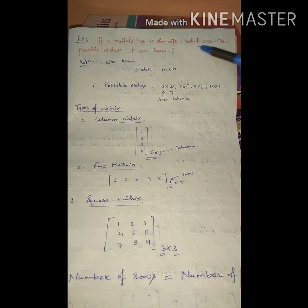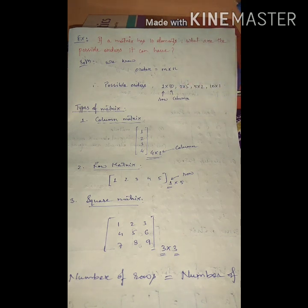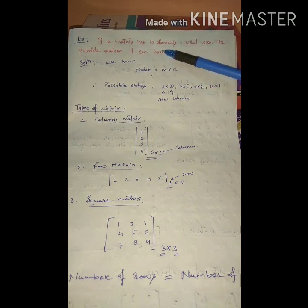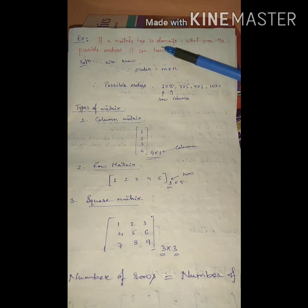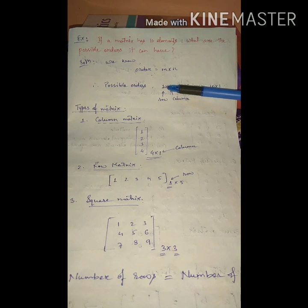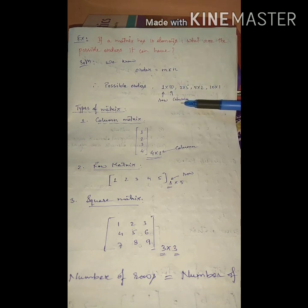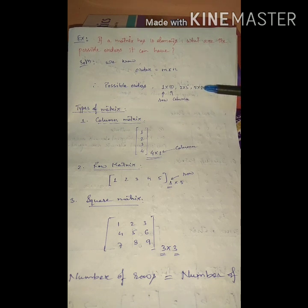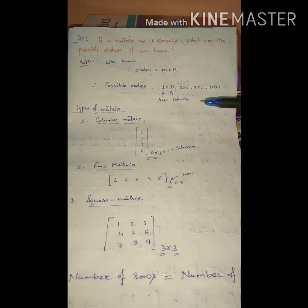If a matrix has 10 elements, what are the possible orders it can have? The order is M by N, and M times N must equal 10. We find all factor pairs of 10: 1×10, 2×5, 5×2, and 10×1. So the possible orders are 1 row 10 columns, 2 rows 5 columns, 5 rows 2 columns, and 10 rows 1 column.